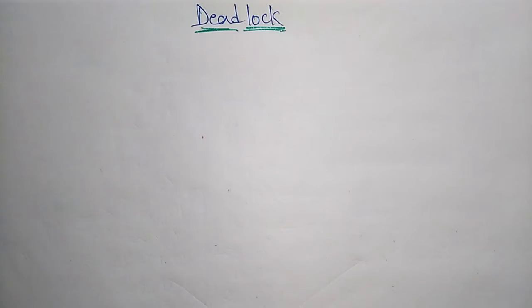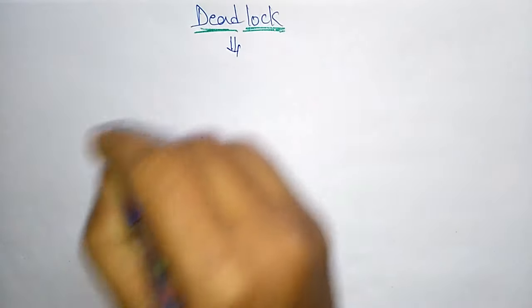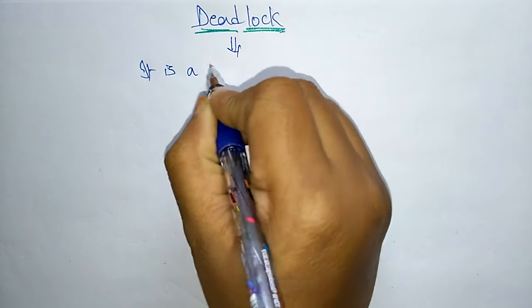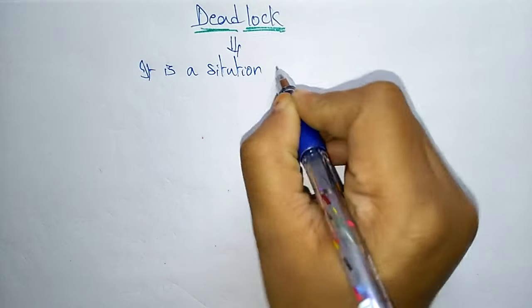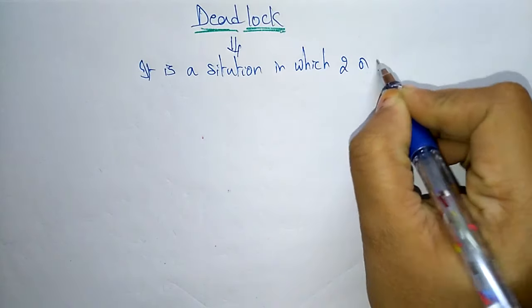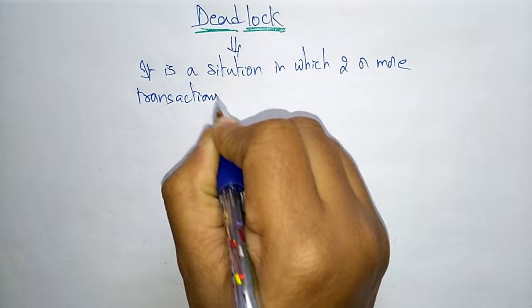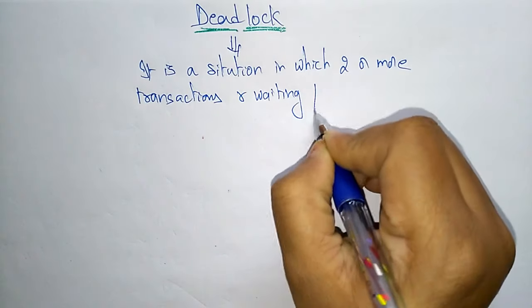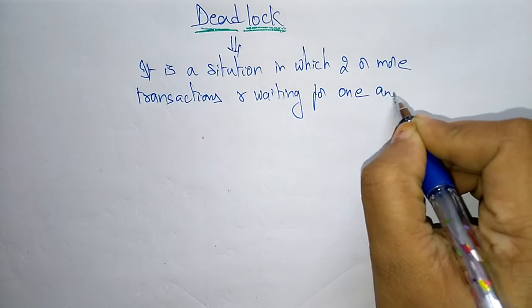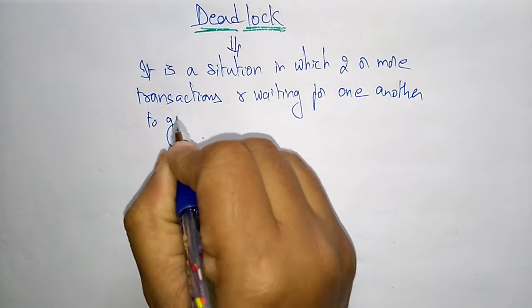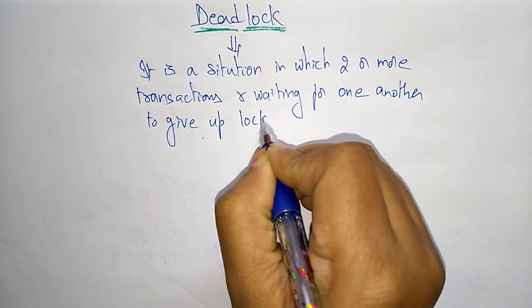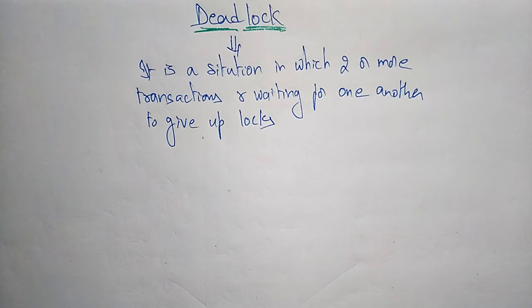Coming to our next topic, that is deadlocks. So what is a deadlock? A deadlock is a situation in which two or more transactions are waiting for one another to give up locks.